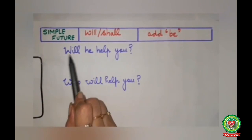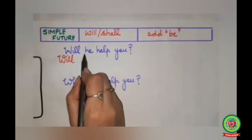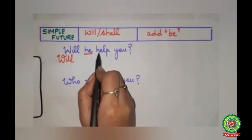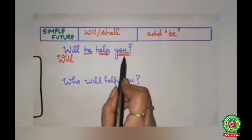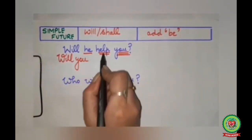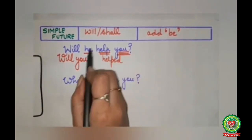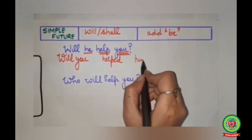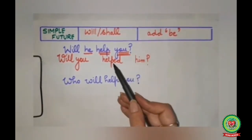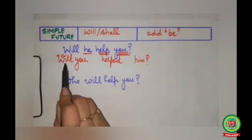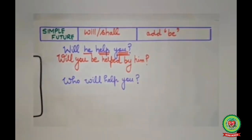In 'Will he help you?', 'will' will remain the same. 'You' will come to the beginning, 'help' will change into 'helped', and 'he' will become 'him'. We have to add the word 'be' which will come before the word 'helped'. The answer will be: 'Will you be helped by him?' with a question mark.